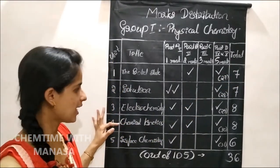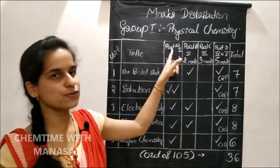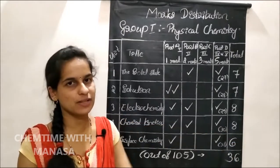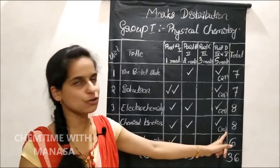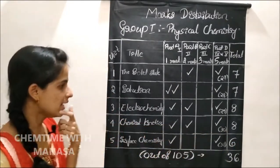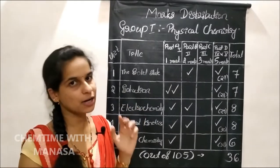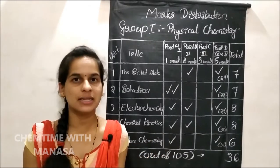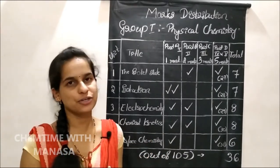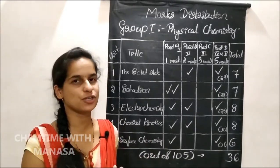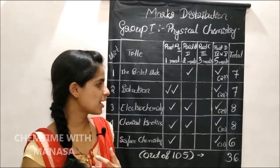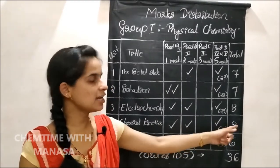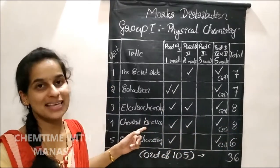Chemical kinetics. From chemical kinetics, 1 one-mark question, 1 two-mark question, and 1 five-mark question will be asked. The 30th question in your question paper. Here, either a 3 mark numerical will be asked or a question on the derivation part — either derivation of the integrated rate expression of zero order or first order reaction, or on the half-life period. Totally 8 marks will be asked from chemical kinetics.